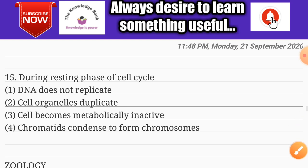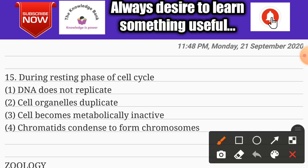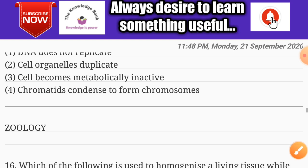Question number fifteen: during the resting phase of the cell cycle — options are DNA does not replicate, cell organelles duplicate, cell becomes metabolically inactive, and chromatin is condensed to form chromosomes. The correct answer is option two: cell organelles duplicate.